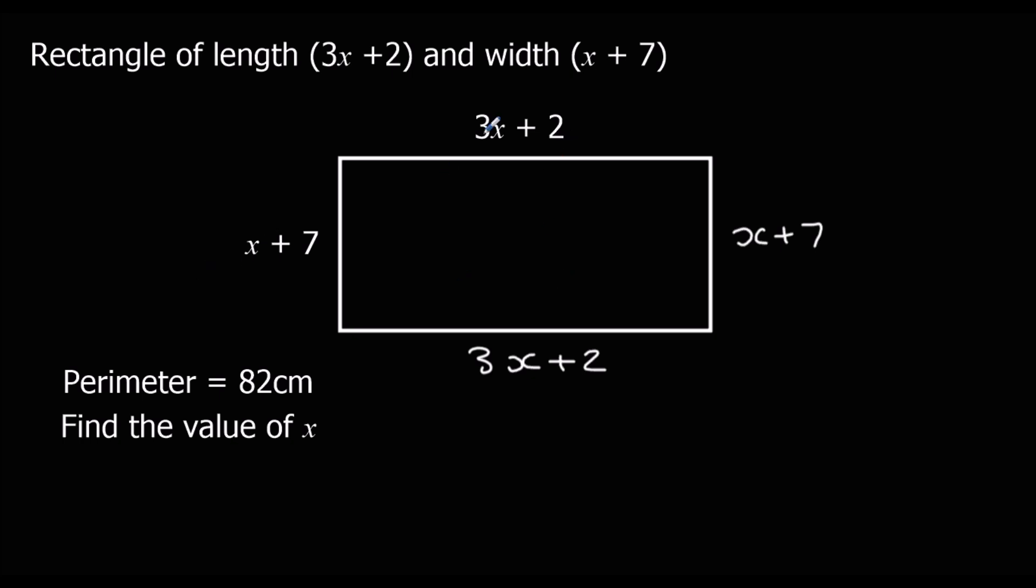If we add up the x's, we've got 1 plus 3 is 4, and then another 4 there, so we've got 8x. And we've got 7 plus 2 is 9, and another 9 for these two sides, so that's 18. These add up to 8x plus 18. That's the perimeter, and we know that equals 82 centimeters.